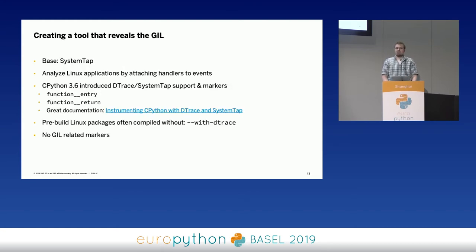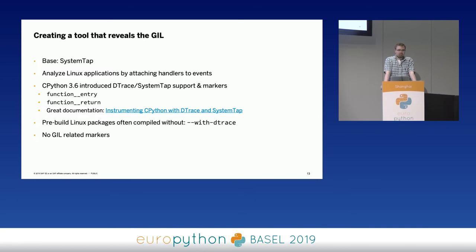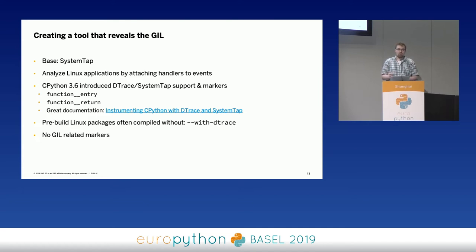The truth is, there is no magic GIL contention analytics tool. That means we probably have to do it ourselves. Let's create a tool which actually reveals the GIL and hopefully satisfies all our requirements. For that, we can use an existing framework called SystemTap, available on Linux machines. It allows analyzing applications by attaching certain event handlers to applications — handlers attached to events emitted by applications or by the Linux kernel itself — and doing certain calculations within these event handlers, for example printing out measured times.